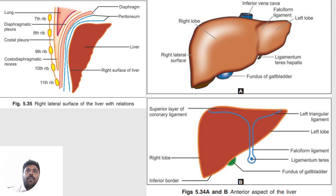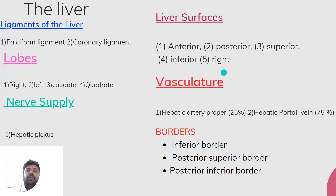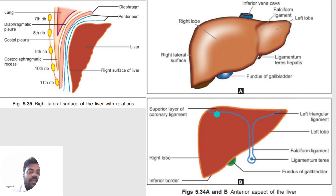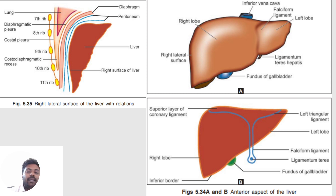Coming to the posterior surface: the posterior surface has the bare area, the groove for the inferior vena cava, the caudate lobe, and the groove for the abdominal part of the esophagus.